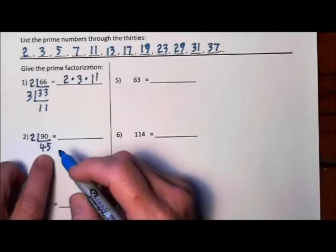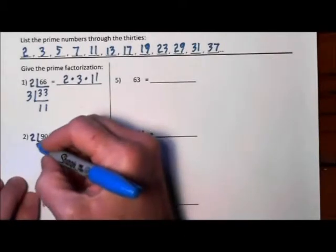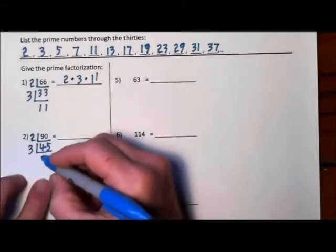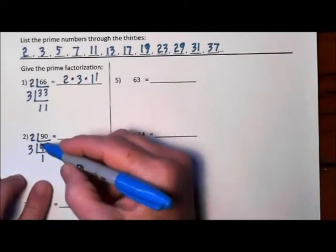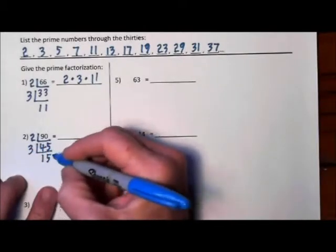Will 3 go into 45? You add 4 and 5 and you get 9, so 3 will go into 45. 3 goes into 4 once, and then you have 15 left over. 3 goes into 15, 5 times.